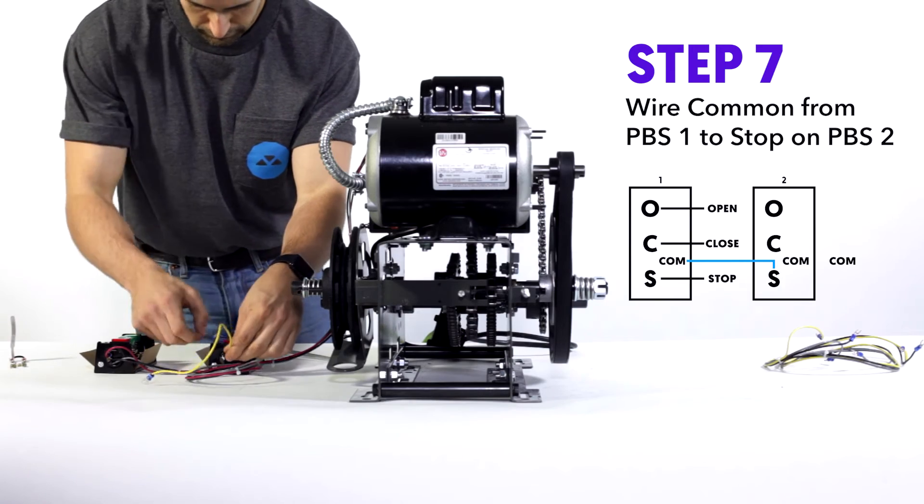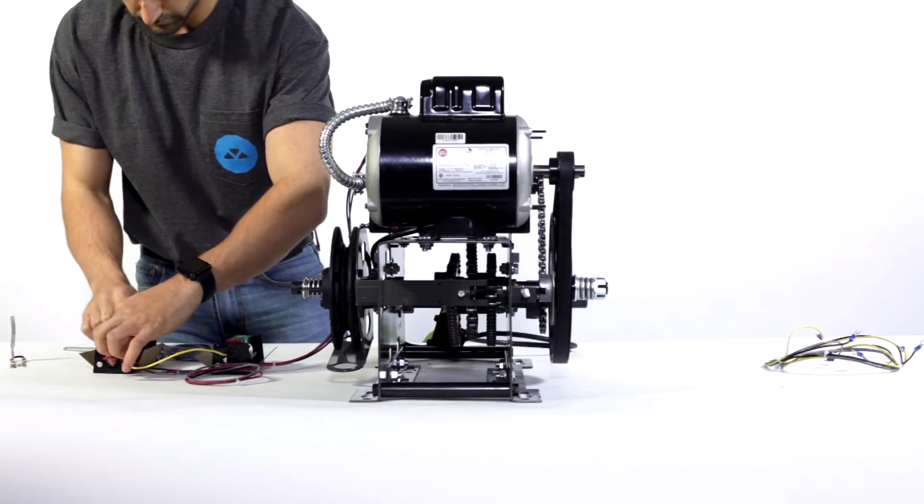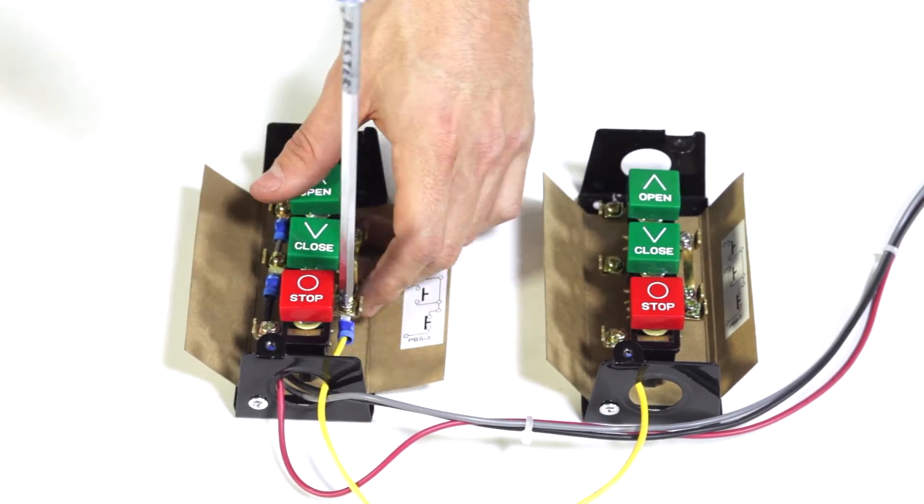Step seven, here's where it changes a little, you wire common from push-button station one to stop on push-button station two. Now you can do this through a junction box or in the operator itself.